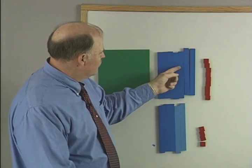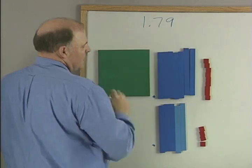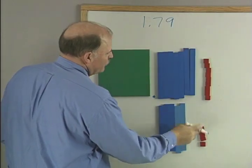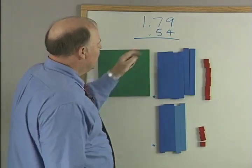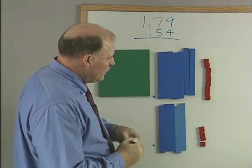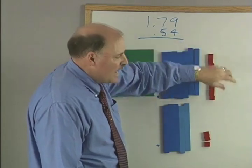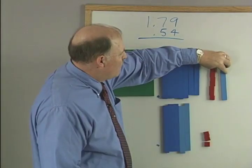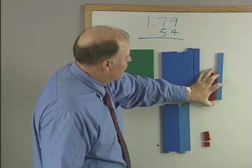1.79 plus 0.54. So we're going to add the 9 plus the 4, and we know that if we have one more penny or one more hundredth, we're going to be able to swap that for a tenth or a dime, thinking in terms of money.